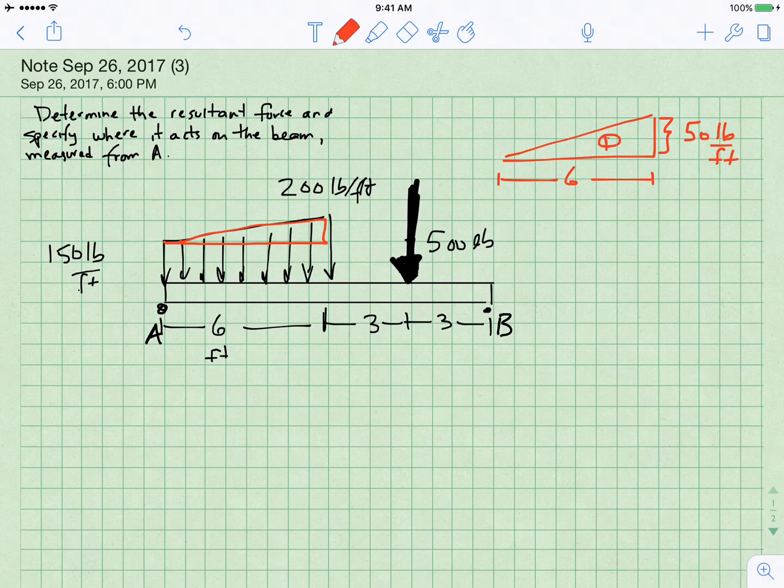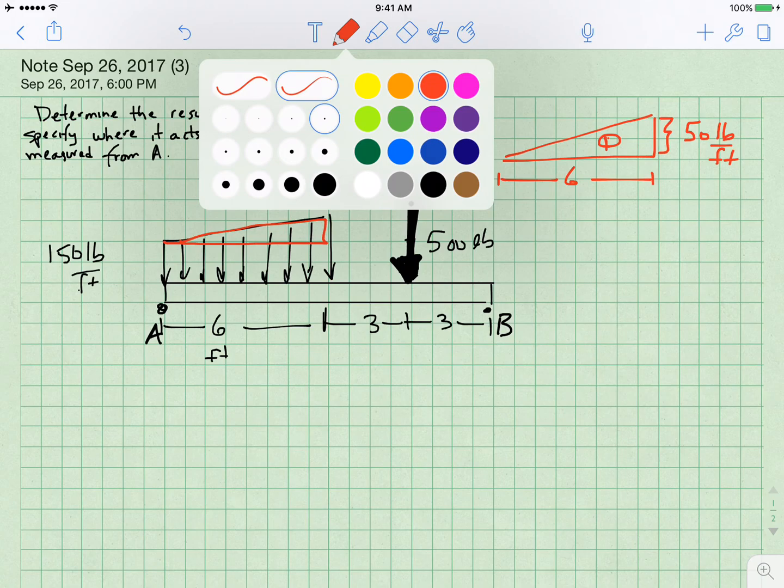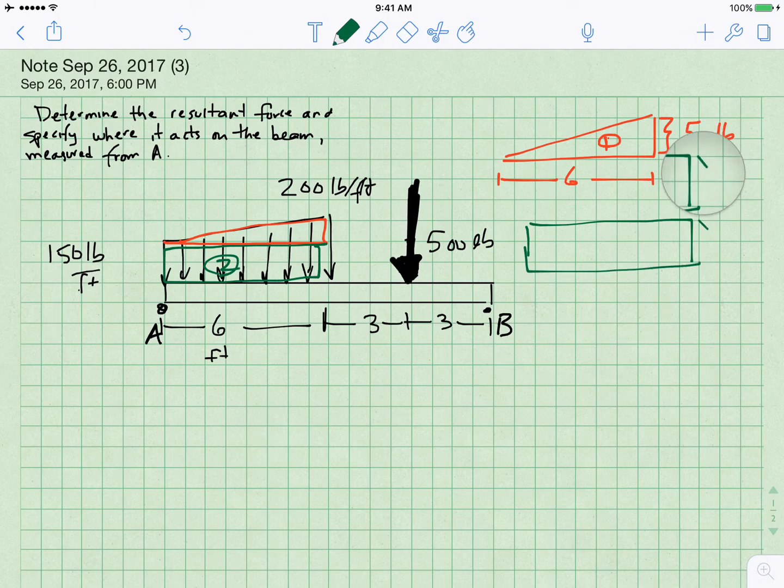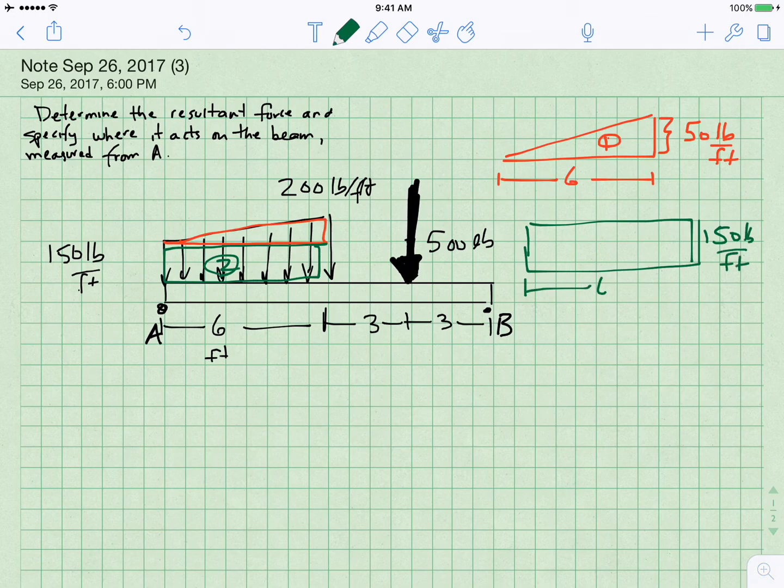That I'm going to call area one. The second area that I see is that we have an area that looks like a rectangle to me and it's right there and I'm going to call it area two. So that rectangle has a shape like this. It has a height of 150 pounds per foot and it also has a base length of six. I'm going to call that area two.